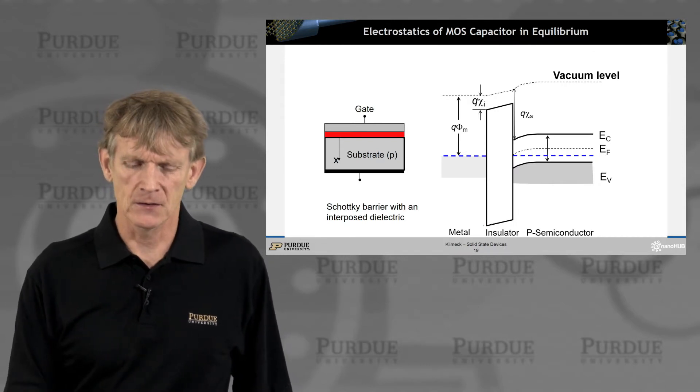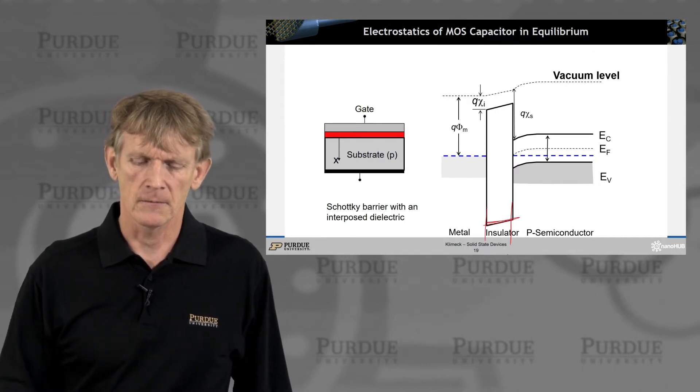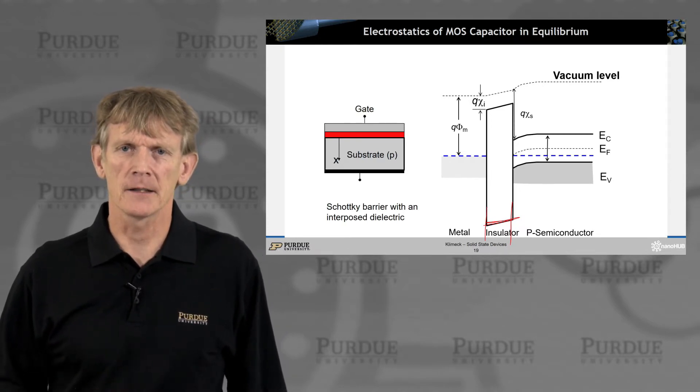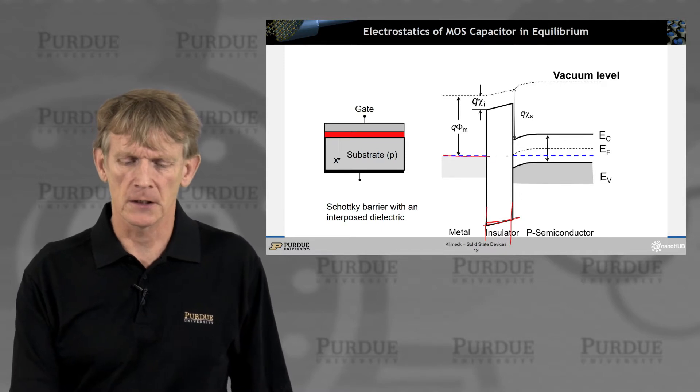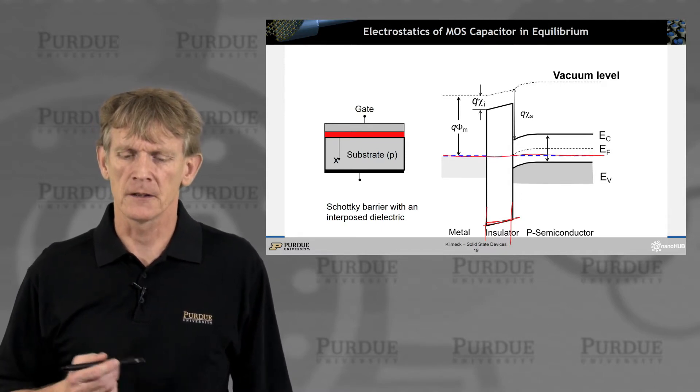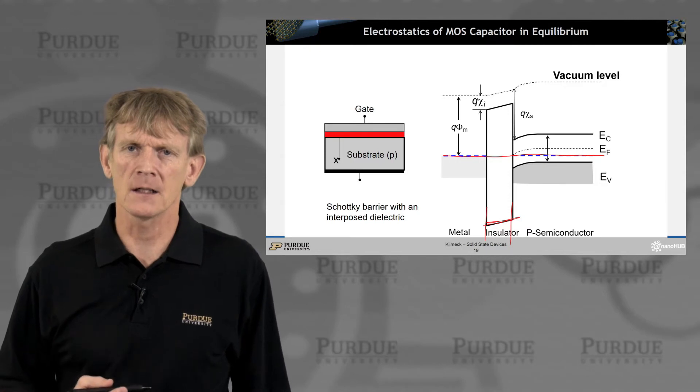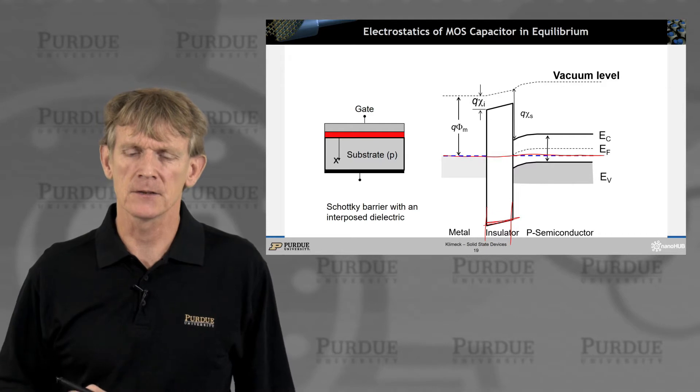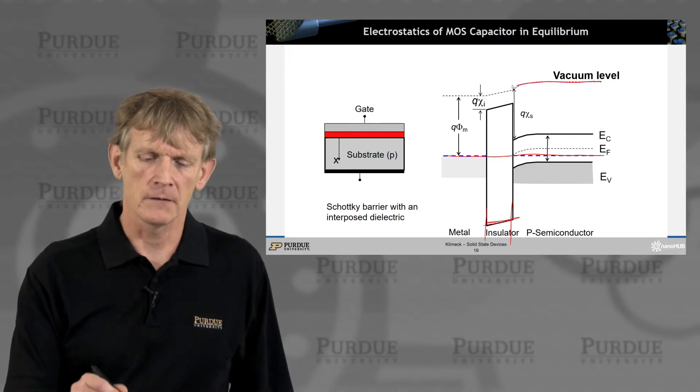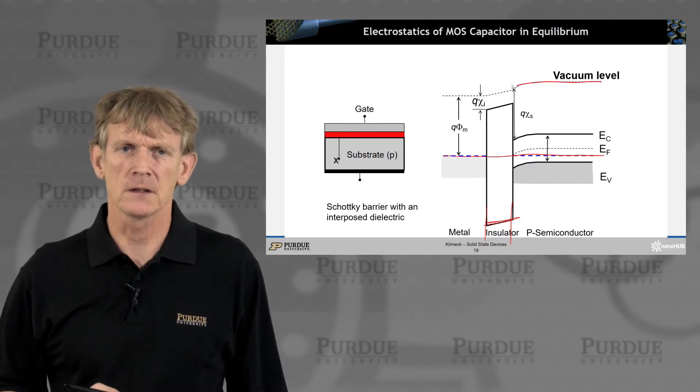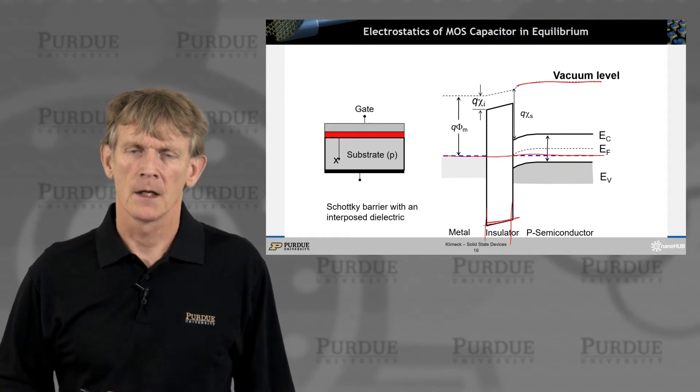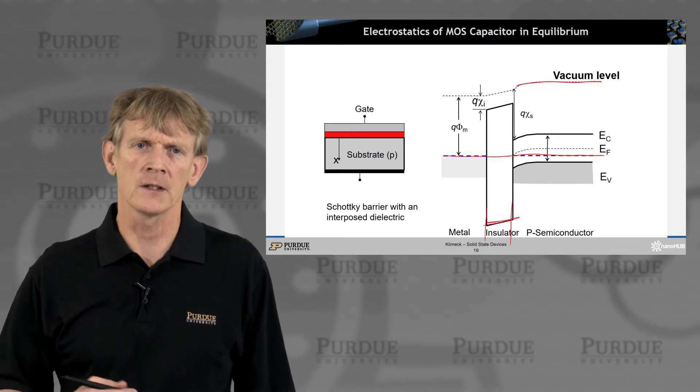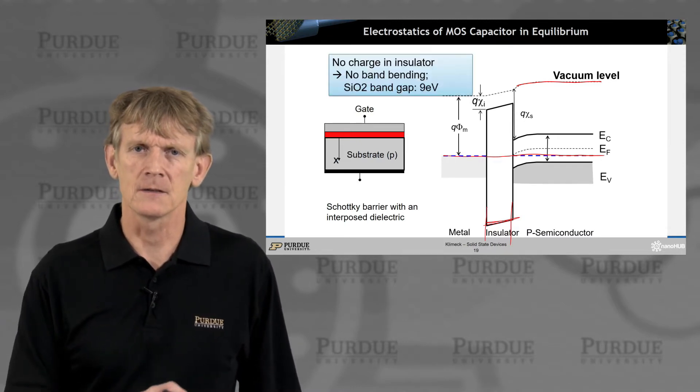But again, you have this insulator in between here. And the usual stuff we do when we draw band edge diagrams, right? We will start from a flat Fermi level, we figure out what the dopings are, we figure out what the work functions are, we figure out what the electron affinity is, and have the vacuum level that joins these heterostructures together, and we draw band edge diagrams. So we'll do this over and over, and we'll also do it for these MOS devices now.